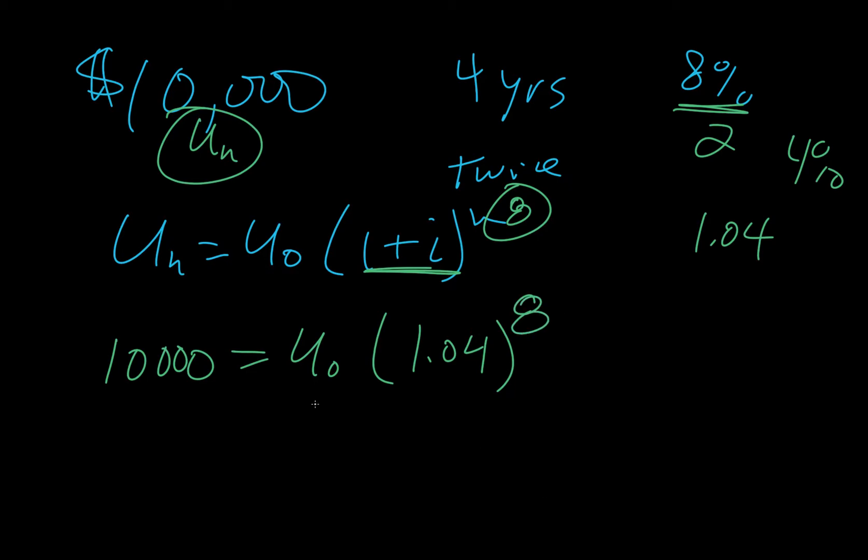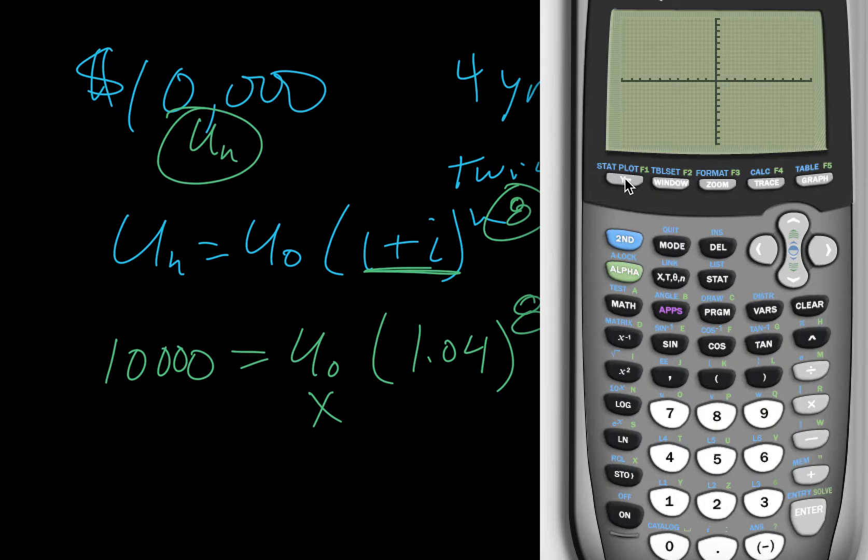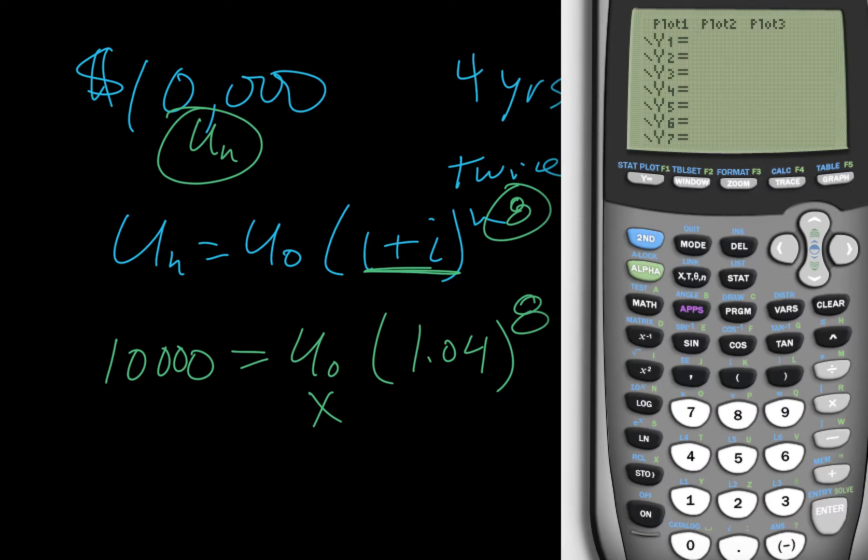Now, in our calculator, we're just going to call our u naught an x. But since we haven't learned how to do this algebraically yet, we are going to just use a graphing calculator. And so once again, we type in 10,000, because that's the left side of the equation. Type in the right side, which is going to be x times 1.04. Close that. Raise it to the 8.